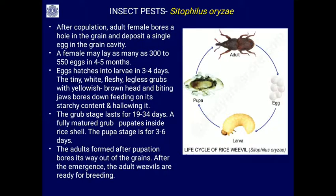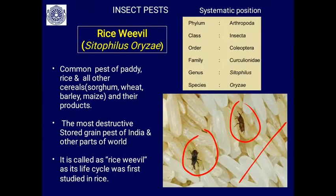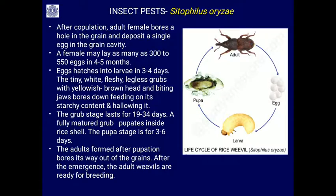After copulation, the adult female bores a hole in the grain - whether wheat or rice - and deposits a single egg in the grain cavity. A female may lay as many as 300 to 550 eggs over a duration of four to five months.